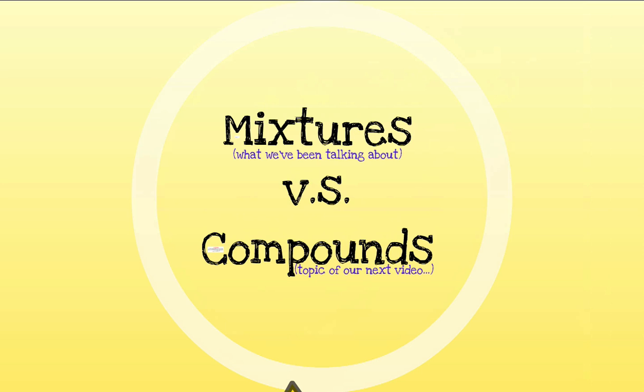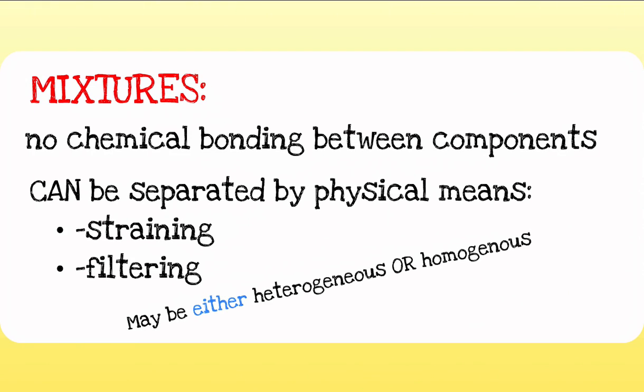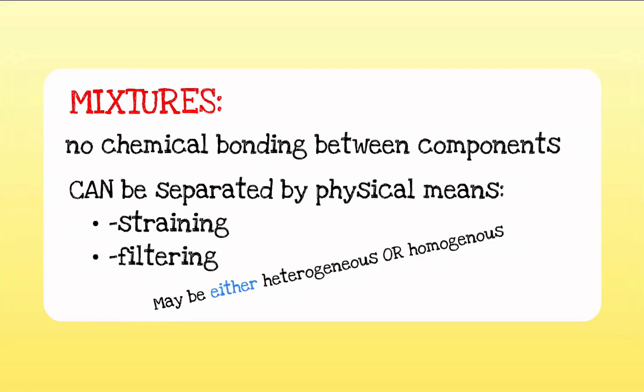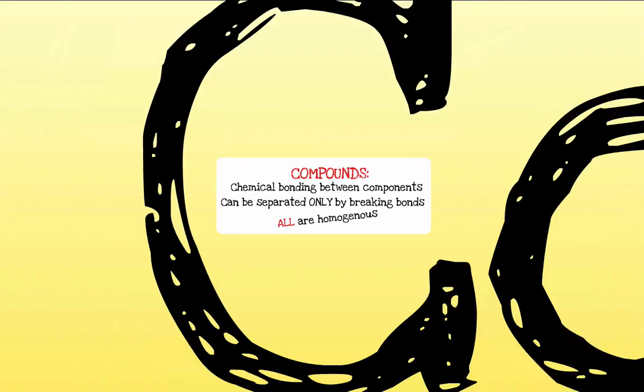Let's take a look at mixtures versus compounds. As we've just seen, mixtures have no chemical bonding between the components — in fact, some can even separate by physical means like straining, filtering, or just settling. Mixtures may be either heterogeneous or homogeneous. That's in direct comparison to a compound: compounds actually have chemical bonding between their separate parts. You can only separate these by breaking bonds. All compounds are homogeneous.